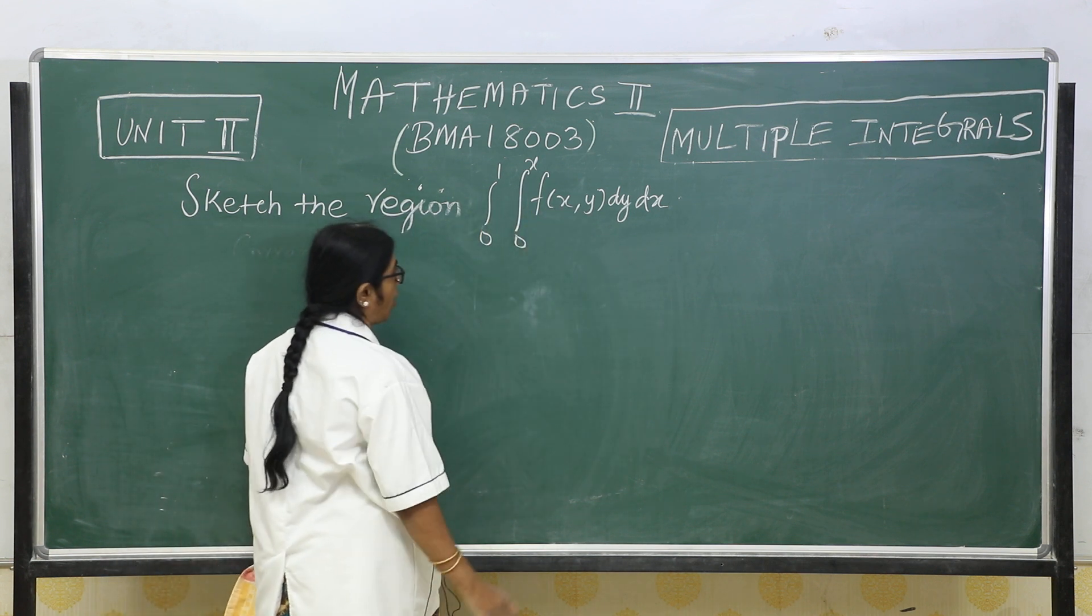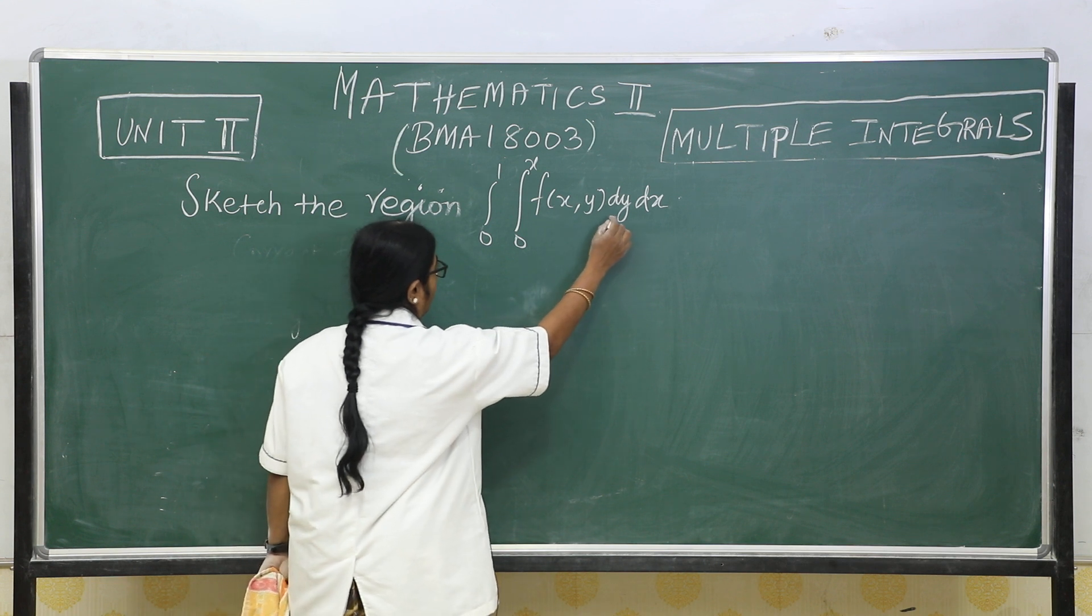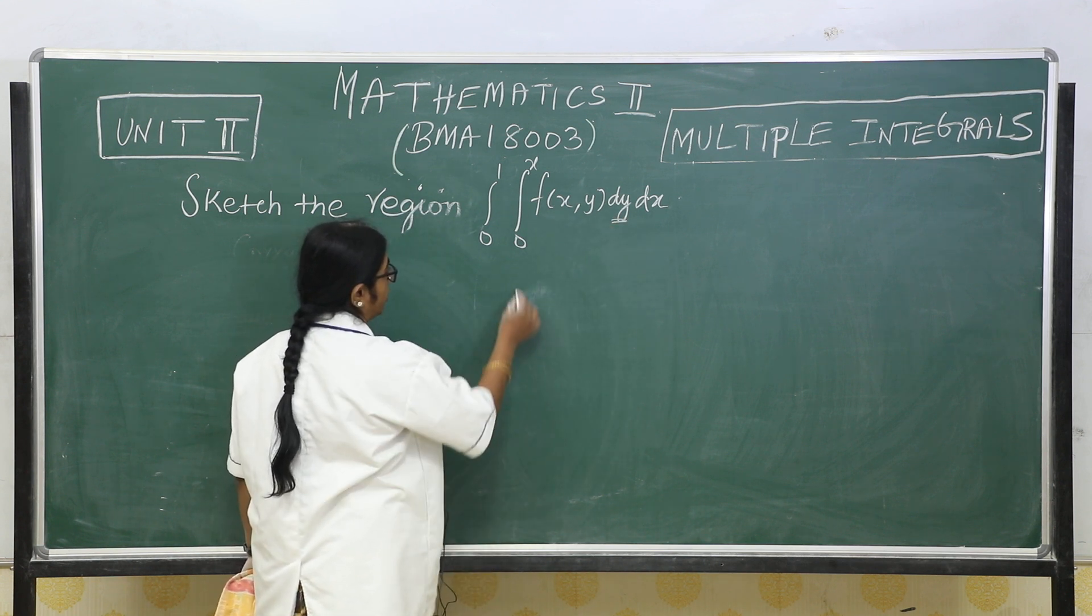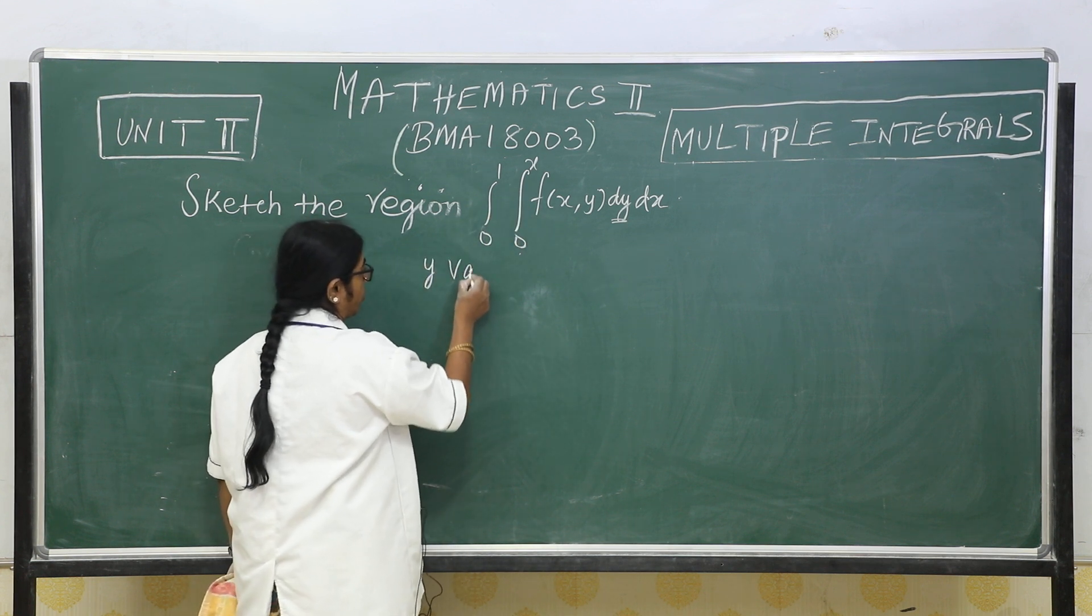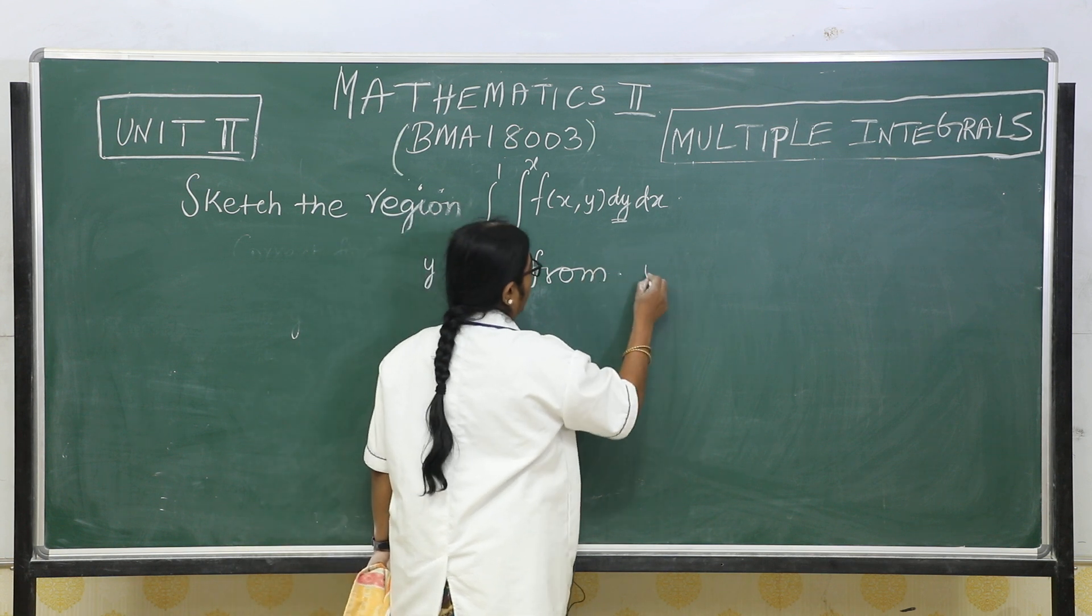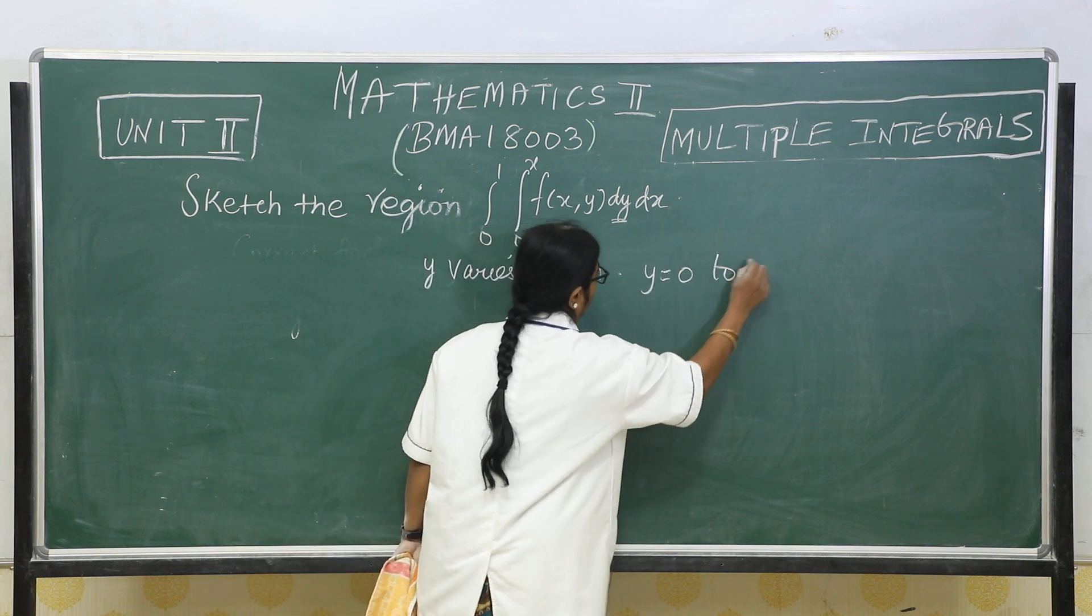It is already in the correct form. Why? Because what is your dy? The limits of y is 0 to x. So y varies from y equal to 0 to y equal to x.